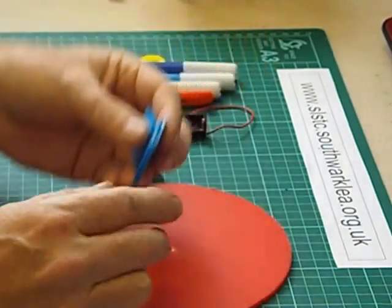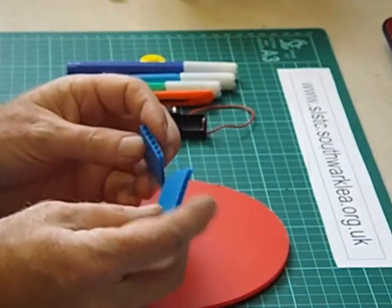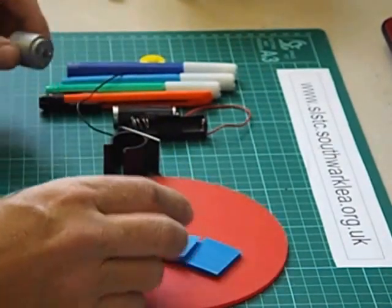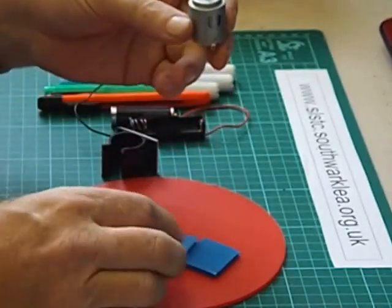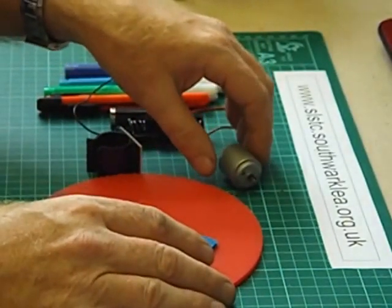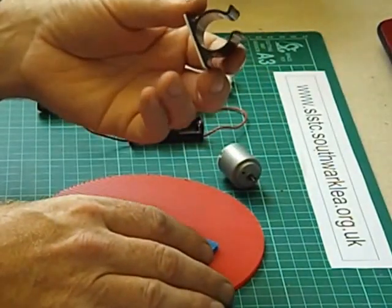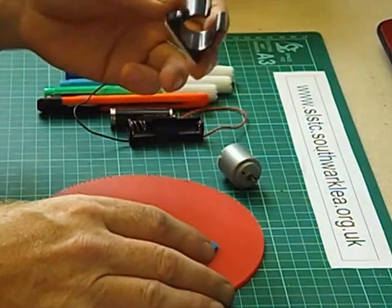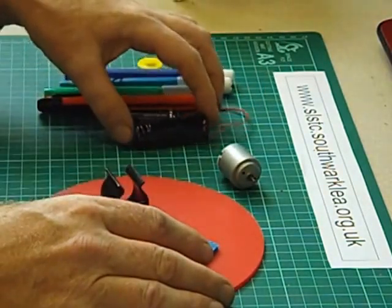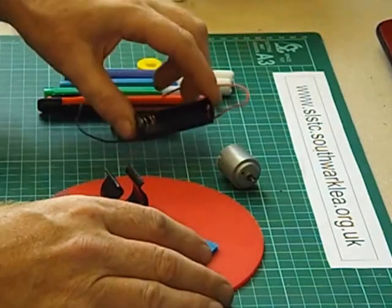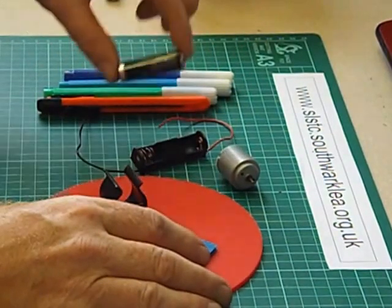I've got a couple of 4mm pieces of corex, these are spacers. A cheap electric motor. A motor clip or you could just glue the motor down. A single AA battery holder, AA battery.